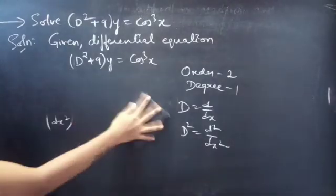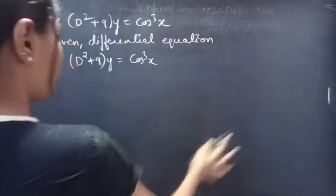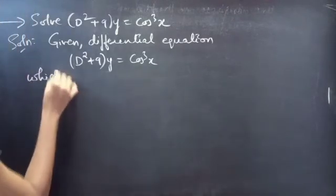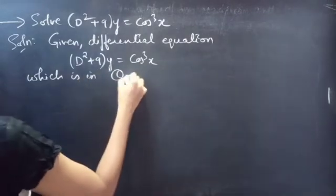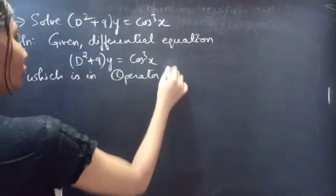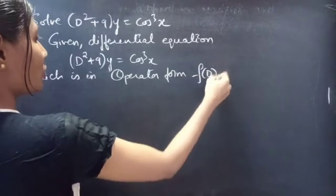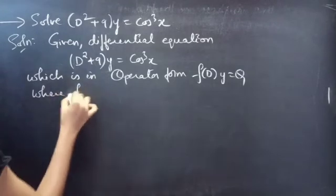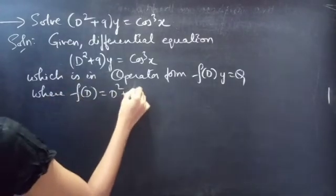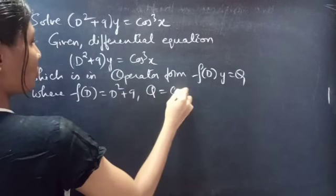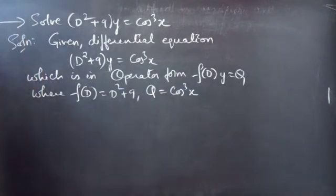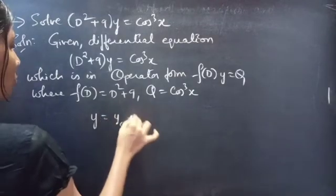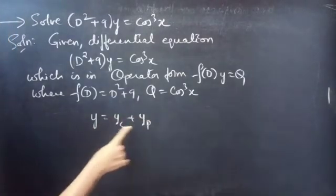We are given a differential equation in operator form: f(D)·y = Q, where f(D) = D² + 9 and Q = cos³x. We need to find the general solution, given by y = yc + yp, where yc is the complementary function and yp is the particular integral.